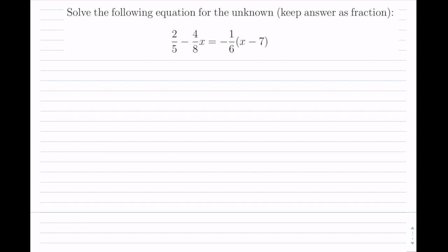My first step, there's really nothing to do on the left hand side here yet, at least. So I will take the right hand side and I will bring this negative 1 over 6 inside of the brackets, multiplying by each term.